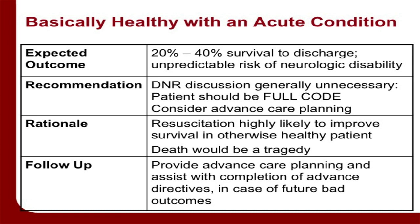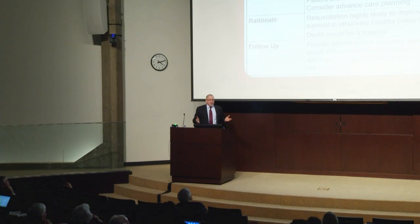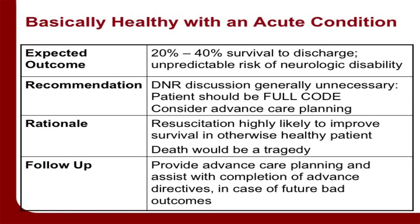We have one case in each of the three categories: the basically healthy, advanced or chronic illness, and the imminently dying. I'm going to go through them one at a time as to why they should be treated differently. It turns out that for a basically healthy person, the expected outcome in the hospital setting is about 20% survival to discharge if you have a cardiac arrest. Out-of-hospital outcomes are different, but there's actually one place out of hospital where cardiac arrest outcomes are even better than in the hospital. Does anybody know where that is? The casino.